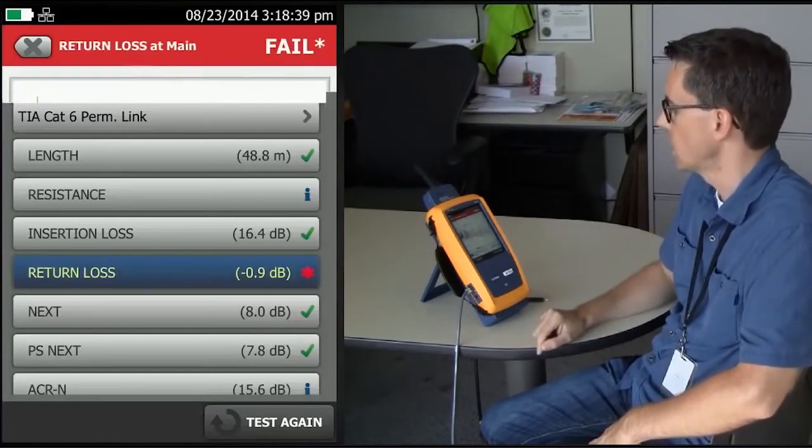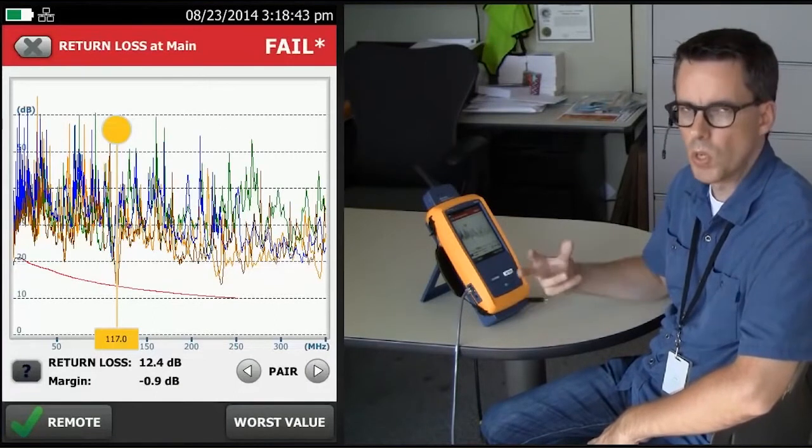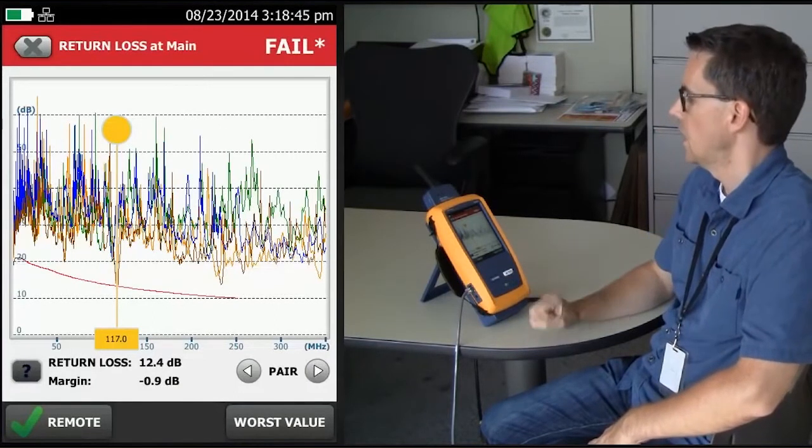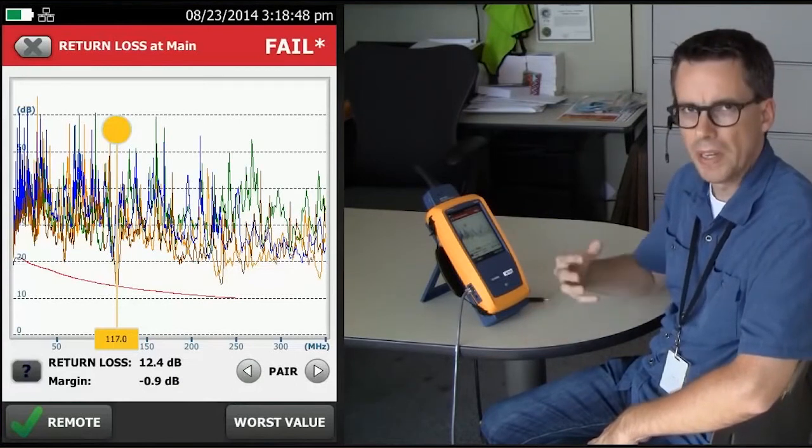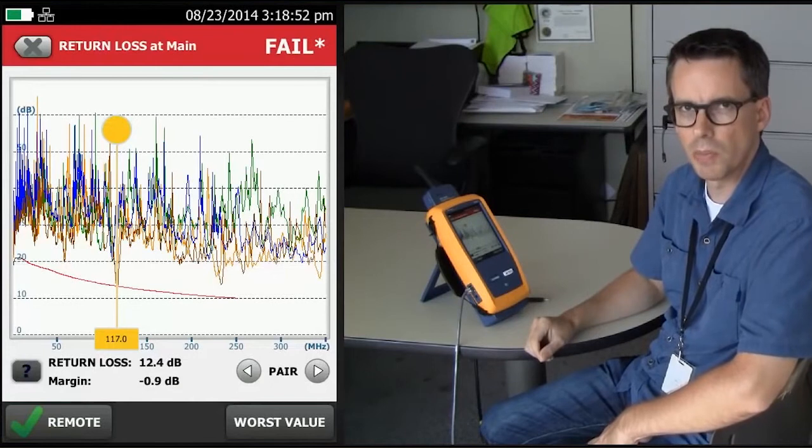If I tap on return loss, the test is going to automatically go to the end where that worst failure was, and it's detected that the measurement from the near end, not from the far end, is where our worst performing return loss measurement was.